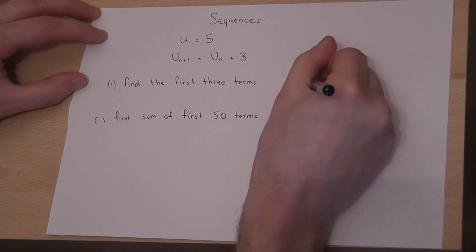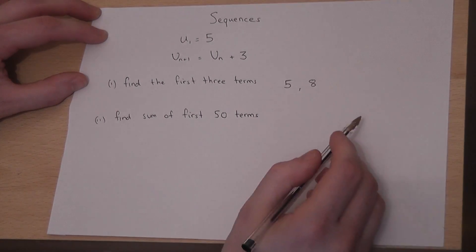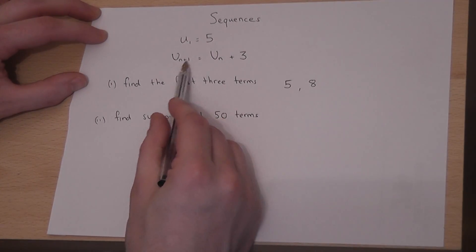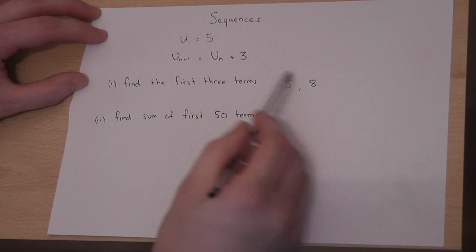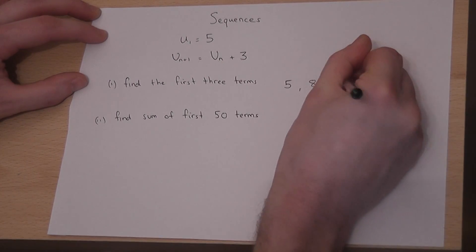which is 5 plus 3, which equals 8. Then to find the third term, we use the second term, which was 8, add on 3. So the answer is 11.